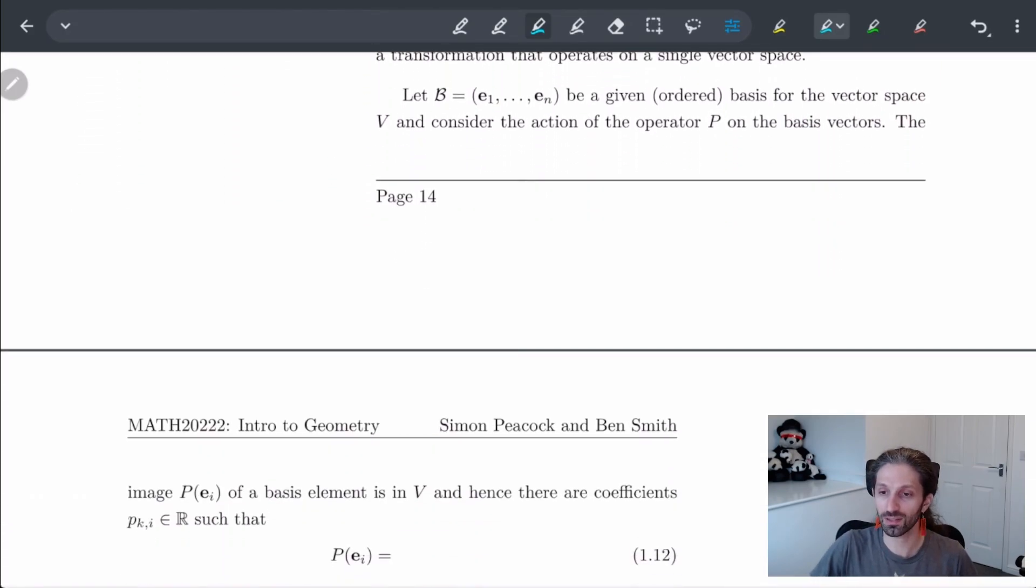So let's start getting into this. We're going to start off with some given ordered basis of a vector space B, and we're going to consider the action of some operator on the basis vectors. So here we're saying operator, which basically means it's acting on itself. So V is equal to W, or P is going from V to V.